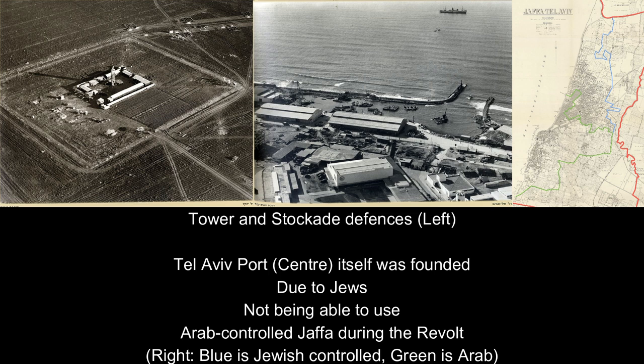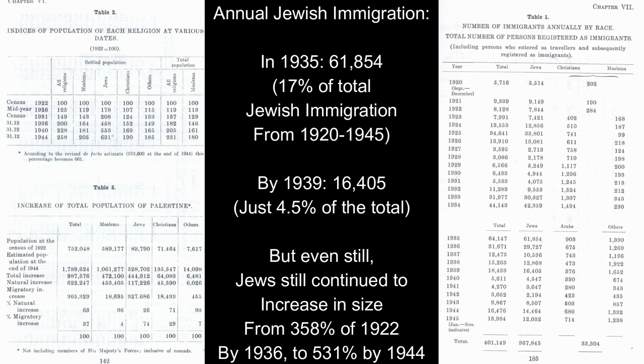As a result of the revolt, Jews increasingly focused on their own settlements and defenses, developing 'tower and stockade' defensive systems to protect their perimeters. The British also tried to subdue Arab anger by halting Jewish migration. In 1935 alone there had been 61,854 new Jewish immigrants; by 1939 this figure had fallen to just 16,405. The British were trying to put a lid on things, recognizing that mass Jewish migration was the core Arab grievance.